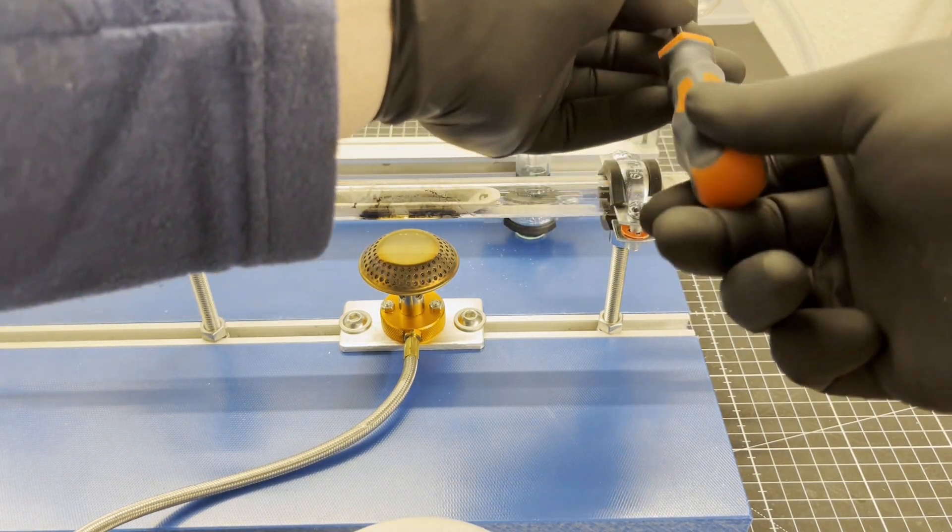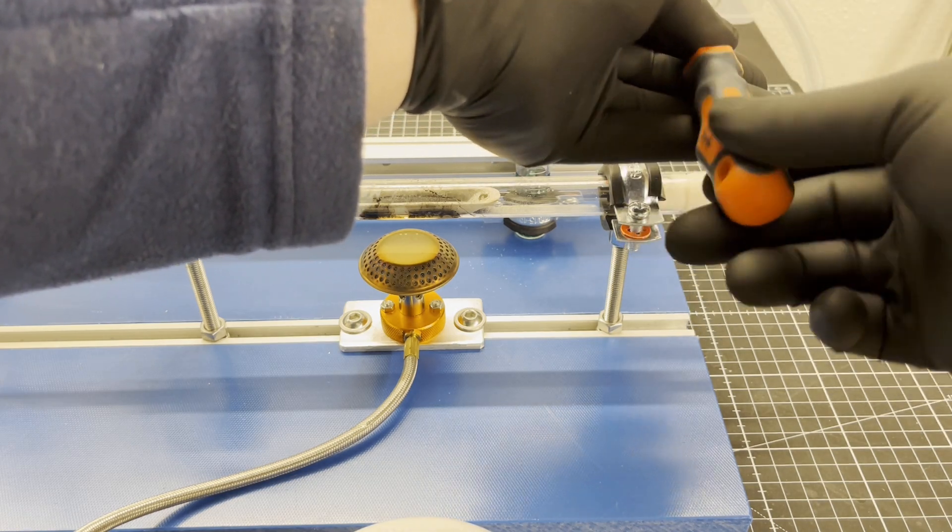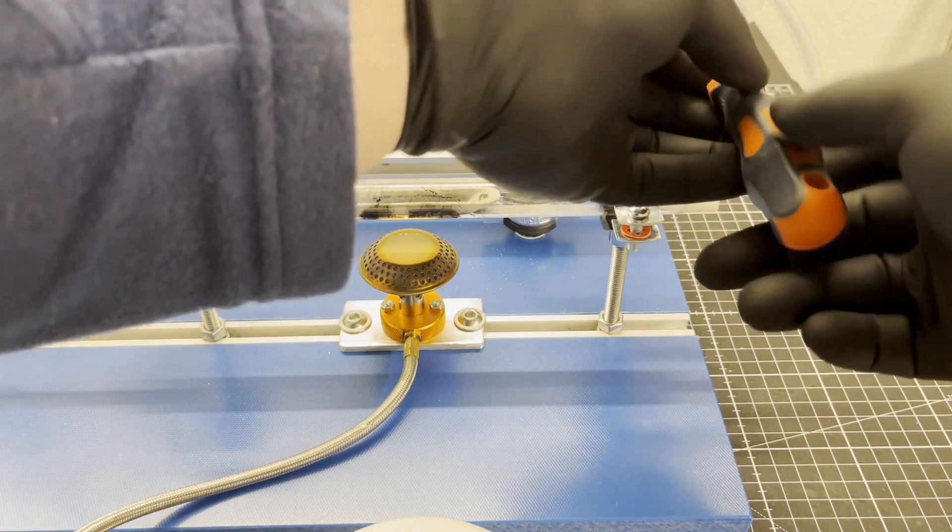The industrial Haber-Bosch process, of course, uses much higher pressures and better catalysts, which greatly increases the yield.